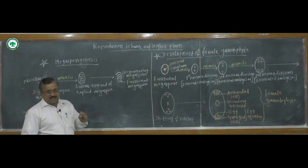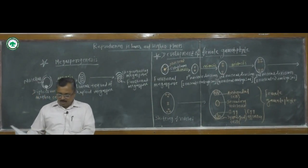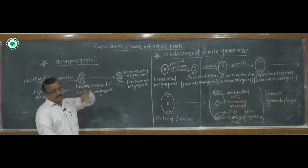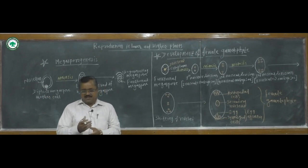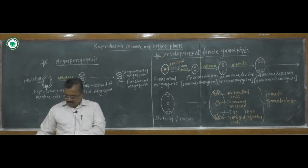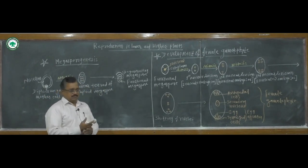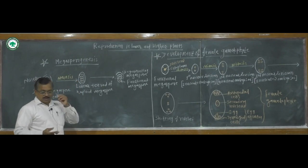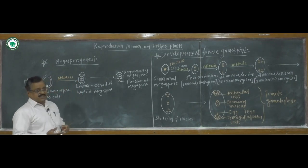Today I will start the next point of this topic, that is reproduction in lower and higher plants. Last lecture we covered the mature anatropous ovule, the structure of mature anatropous ovule. Then the next point is Megasporogenesis.